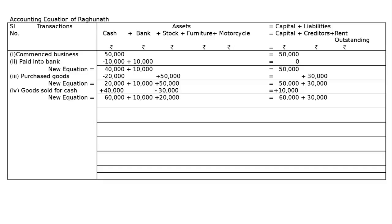Fifth transaction: paid rent Rs. 500. Rent is an expenditure — it will reduce both cash and capital by Rs. 500. We then get our new equation.